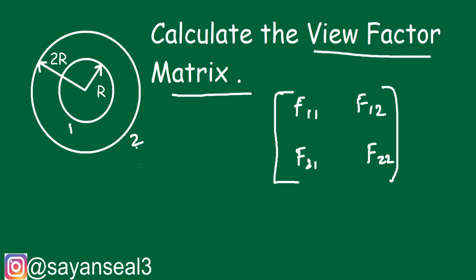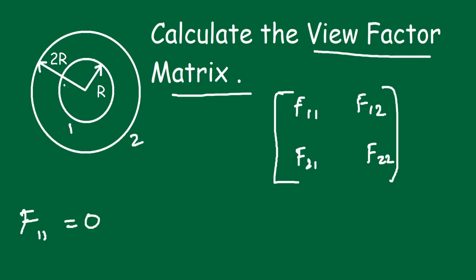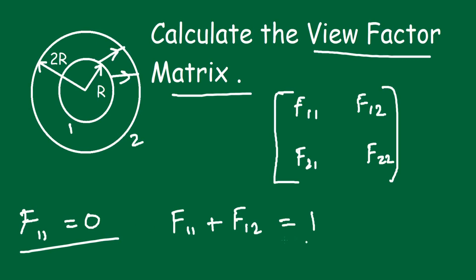F11 = 0 because radiation from surface 1 will never hit surface 1 itself — it will hit surface 2. Using the summability rule: F11 + F12 = 1. Since F11 = 0, we get F12 = 1.